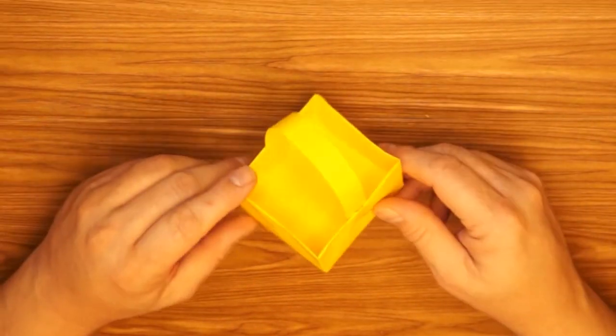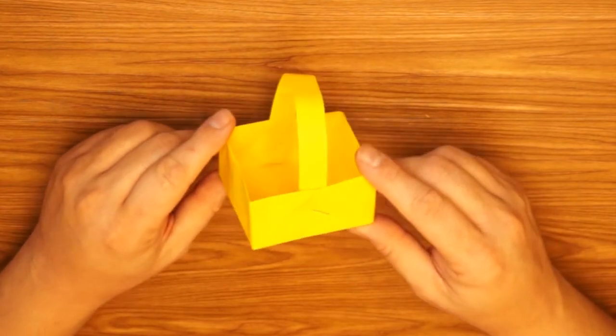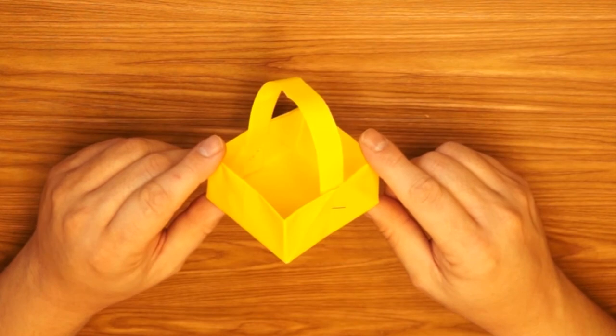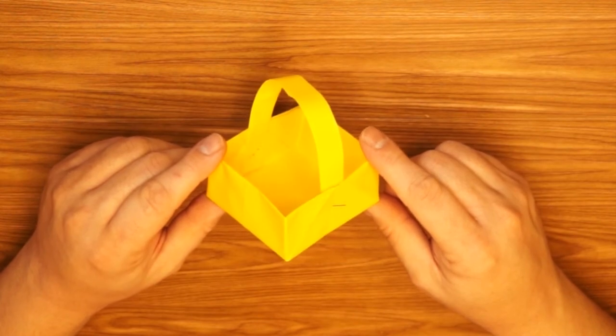And this is our project for today, an origami Easter basket. Just add some Easter grass and an egg and you have a nice table decoration. If you'd like to show me the Easter basket that you've made, check out the contact information below.